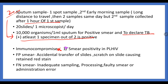As the immunocompromised state increases, smear positivity in persons living with HIV decreases, because in HIV the inflammatory response of the lung decreases. False positive can occur by accidental transfer of slides. False negative smear can occur due to inadequate sampling.